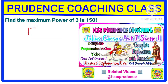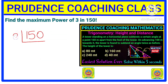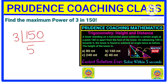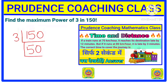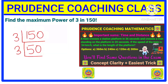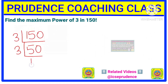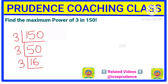First, write 150. Now divide 150 by 3 — the quotient is 50, since 50 × 3 = 150. Now again divide 50 by 3: 3 × 16 = 48, and 3 × 17 = 51 which exceeds 50, so the quotient is 16. Next, divide 16 by 3 — the maximum is 5, since 5 × 3 = 15.